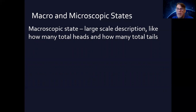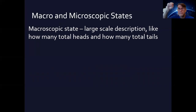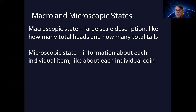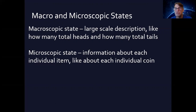A macroscopic state is the large-scale description — the big picture. Young and Friedman use the example of four coins. If you have four coins, there are 2^4 = 16 possible different configurations of coins one, two, three, and four. The microscopic state is the exact configuration of those four coins — information about each individual coin: coin one is in this state, coin two is in this state, coin three is in this state, coin four is in this state. There are 16 possible microscopic states.